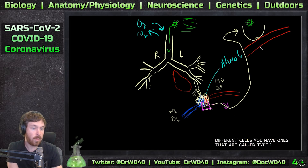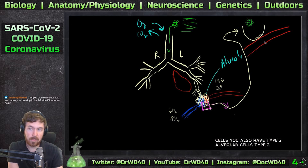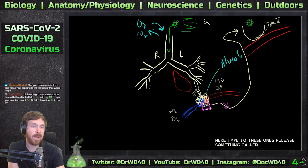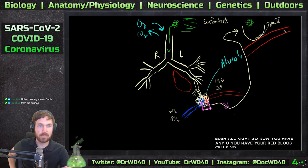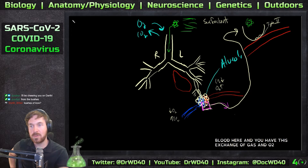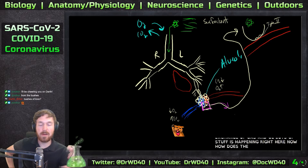Now in your alveoli you have a couple different cells. You have ones called Type 1 pneumocytes or Type 1 alveolar cells. You also have Type 2 alveolar cells, or Type 2 pneumocytes. Type 2 cells release something called surfactant - surfactant is what prevents your alveolar walls from collapsing on themselves because of the presence of water. You have red blood cells going through your blood here and this exchange of gas and O2.